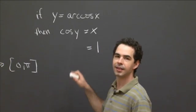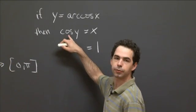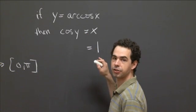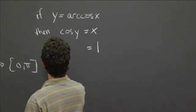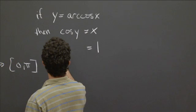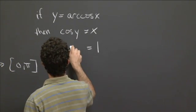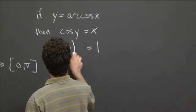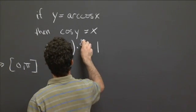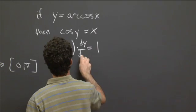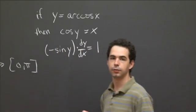And on the left-hand side, well, we have a chain rule here. Because we have cosine of y, and y is a function of x. So the derivative of cosine is minus sine y. And then we have to multiply by the derivative of y, which is dy dx.